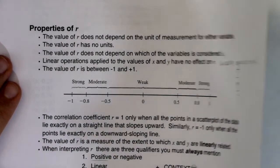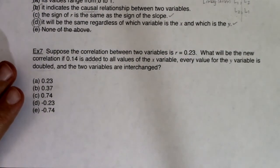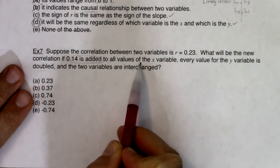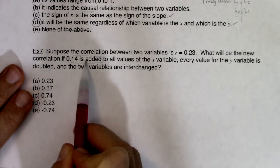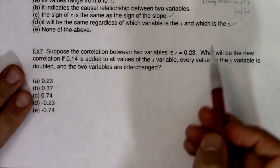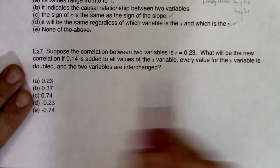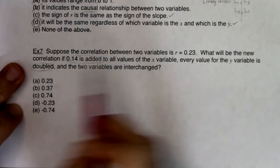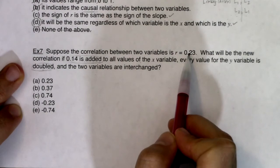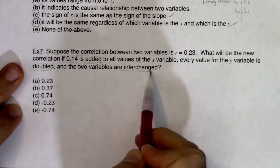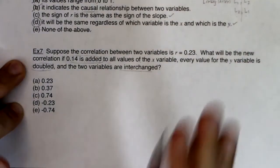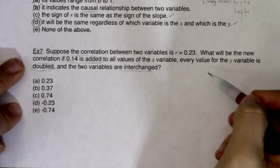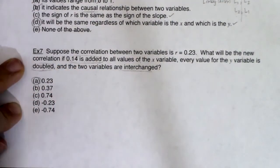Going back to example 7: 0.14 is added to everything in x — that is a linear operation that will not change the R value. The y variables are doubled — that is multiplication, a linear operation which will have no effect on R. And then the variables are interchanged — as we saw in example 6, that also has no effect on R. So with all of these changes, R will still be 0.23.